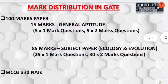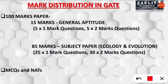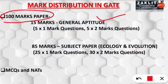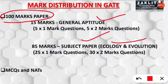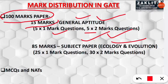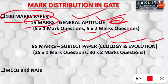The total mark distribution in GATE is 100 marks, covering general aptitude and the subject paper — in our case, ecology and evolution. 15 marks are allocated to general aptitude, which includes questions similar to banking aptitude tests. There are five one-mark questions and five two-mark questions in general aptitude. Scoring well here can compensate for lower scores in the subject paper, much like scoring well in paper one can offset paper two in NET.